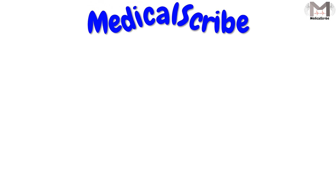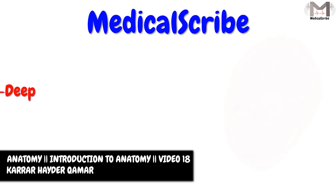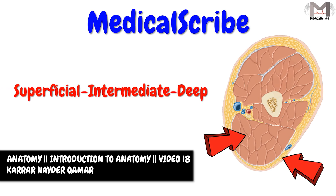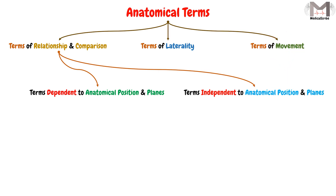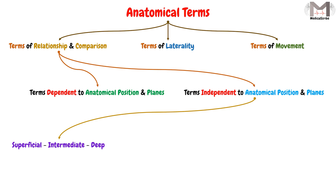Hi guys and welcome back in Medical Scribe. In this video we will talk about the superficial, the intermediate, and the deep terms. In the previous videos we learned how to categorize the anatomical terms, and we said that we have terms that are independent to the anatomical position and to the anatomical planes. These terms are divided into three subgroups: the first is superficial, intermediate, and deep; the second is external and internal; and the third is proximal and distal. Today we will talk about the first subgroup.